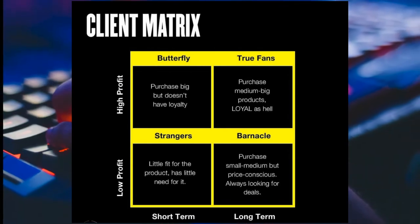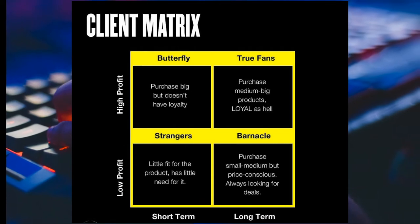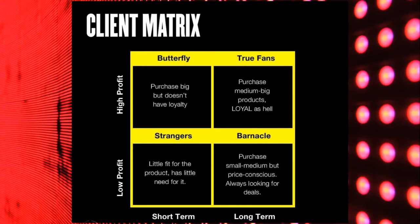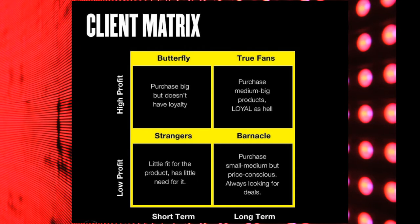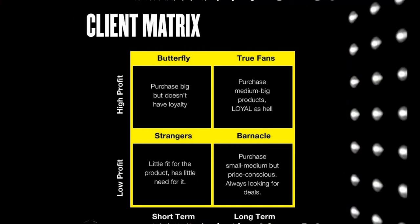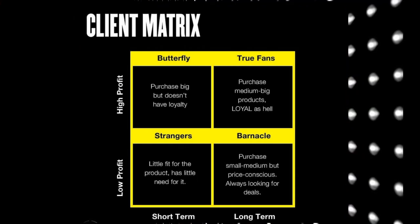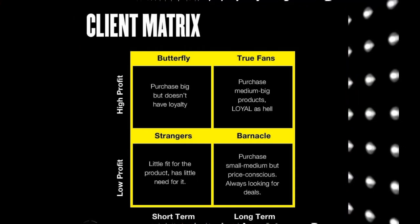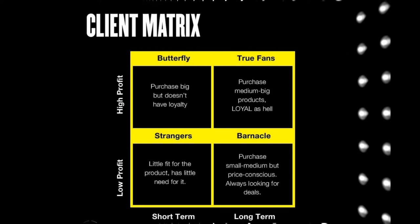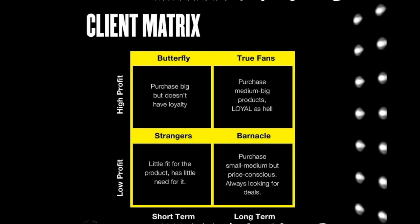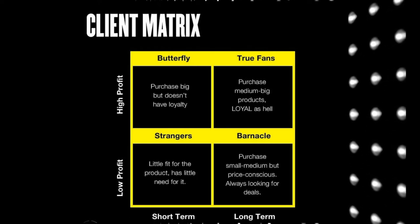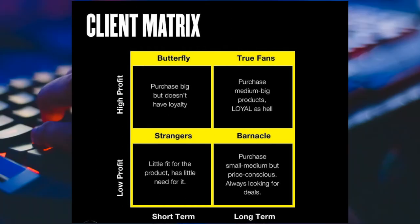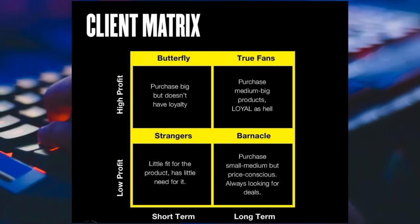The client matrix has four types: butterfly, true fans, strangers, and barnacle. Strangers and barnacle are short-term and long-term low-profit profiles respectively, while butterfly and true fans are high-profit profiles.